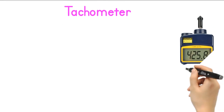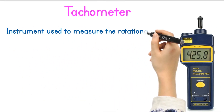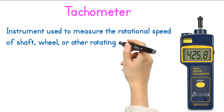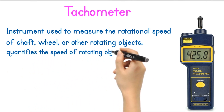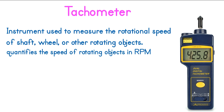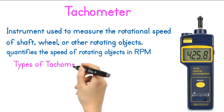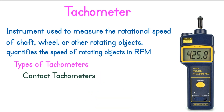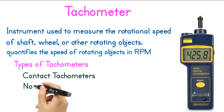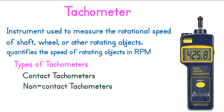Tachometer. A tachometer is an essential instrument used in instrumentation to measure the rotational speed of a shaft, wheel, or other rotating objects. It quantifies the speed of rotating objects, typically in revolutions per minute (RPM). There are two types of tachometers: Contact tachometers, which directly measure the rotational speed by physically touching the surface, and Non-contact tachometers, which use optical sensors or lasers to detect the speed of a rotating object without physical contact, making them useful for delicate or hard-to-reach objects.